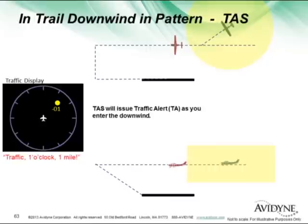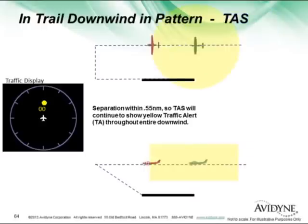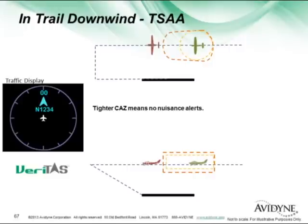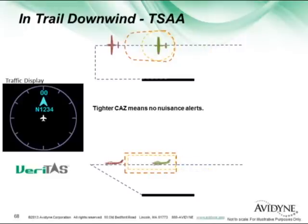Here's another example where I'm in trail downwind, entering the pattern, maybe with a half-mile separation. With a standard traffic system, it's going to set off the alarm continuously as I move through the pattern. With the TSAA tighter tolerances, I can see the guy on my display, but I'm not going to get those continuous nasty alerts unless something changes — like that guy slows way down, or I'm not maintaining speed and I catch up with him.